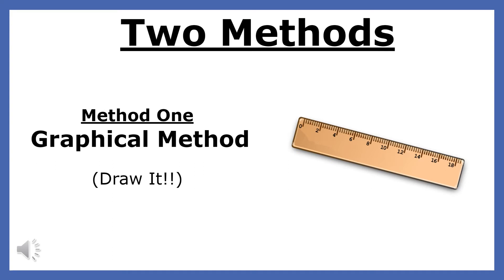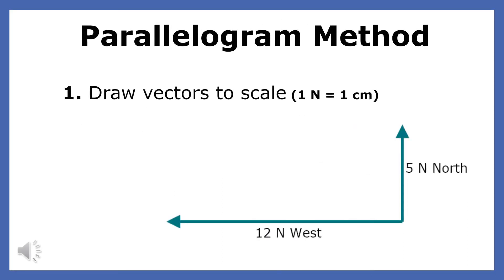There are two methods that you can use to solve this type of problem. One method is called the graphical method. In the graphical method you find the resultant by drawing the force vectors to scale. The technique for finding a resultant when the vectors are tail to tail is called the parallelogram method. The first thing you must do is to produce a scale that relates centimeters to newtons. Since these vectors are not too large, I will make 1 centimeter represent 1 newton. The 5 newton force will be 5 centimeters long and the 12 newton force will be 12 centimeters long.